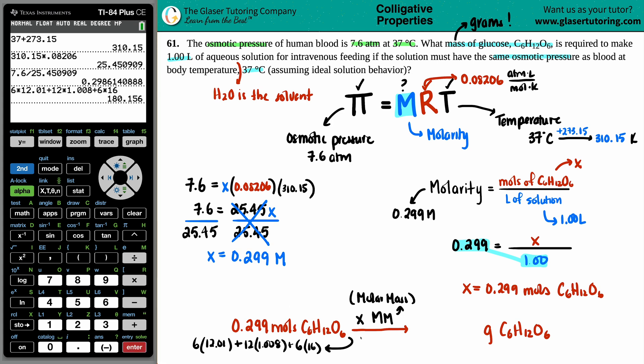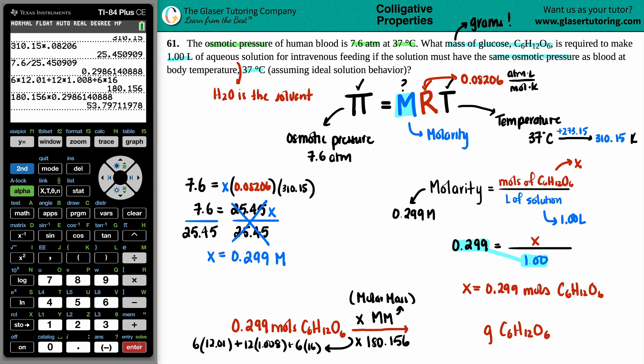So six times 12.01, plus 12 times 1.008, plus six times 16 - roughly about 180. So I'm just going to take that mole value and times by 180.156. So I have my molar mass here, I'm just bringing it down. Love the TI-84, just makes calculations so much easier. Times by that molarity value, which was the mole value. Try to round at the end. And there we go. So now we say, okay, two sig figs, so 54. I like that. And that is the final answer. 54 grams. That is the mass to obtain that osmotic pressure of 7.6 at the blood temp, which is 37 degrees Celsius.